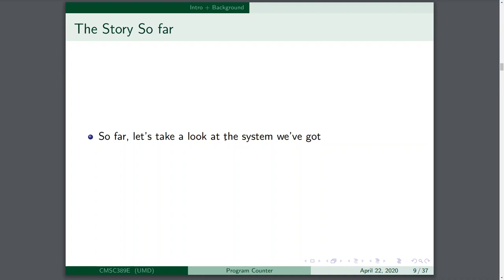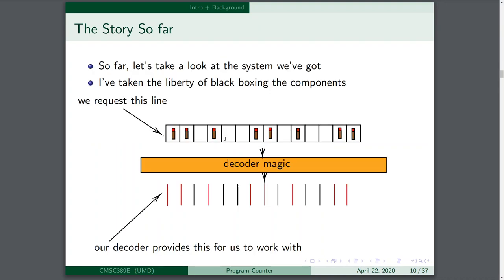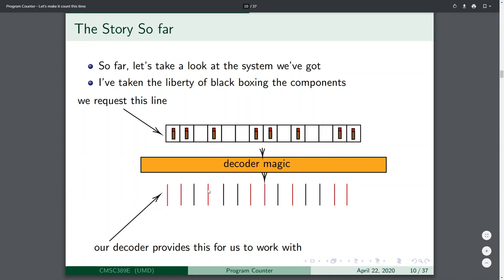Let's take a look at the system we've already produced. So far, we've worked out that we request a particular line — that goes into our circuit. Then we do some decoder magic given that set of redstone blocks. And on the output wires of our circuit, the output comes out. So we request a particular line of code, and our circuit says, okay, here are the signals coming out reflecting this line of code. Our decoder will provide these signals for us to work with.